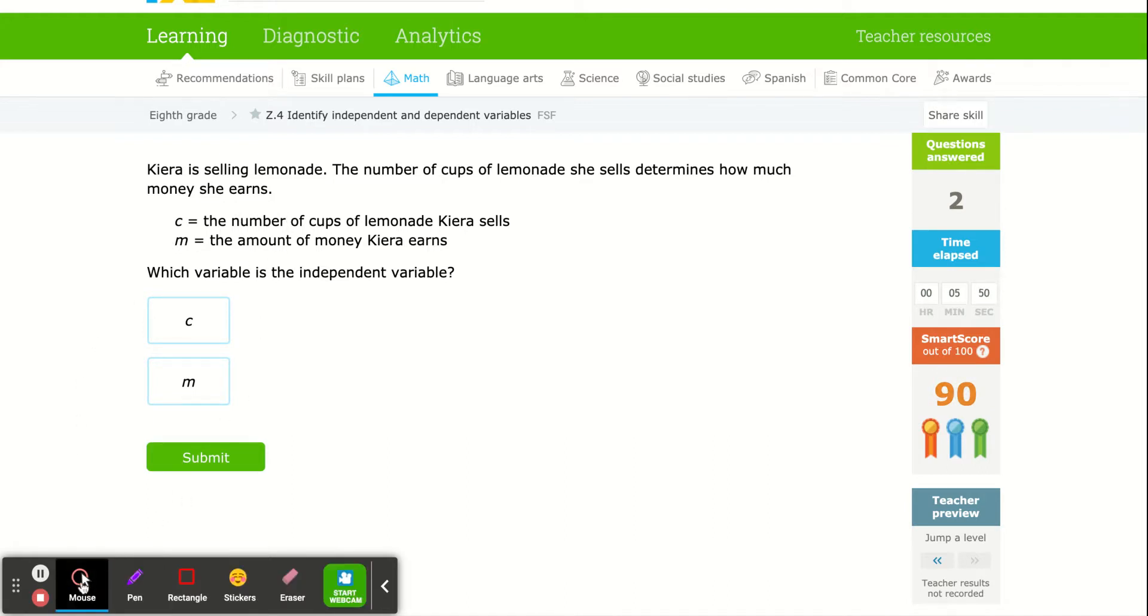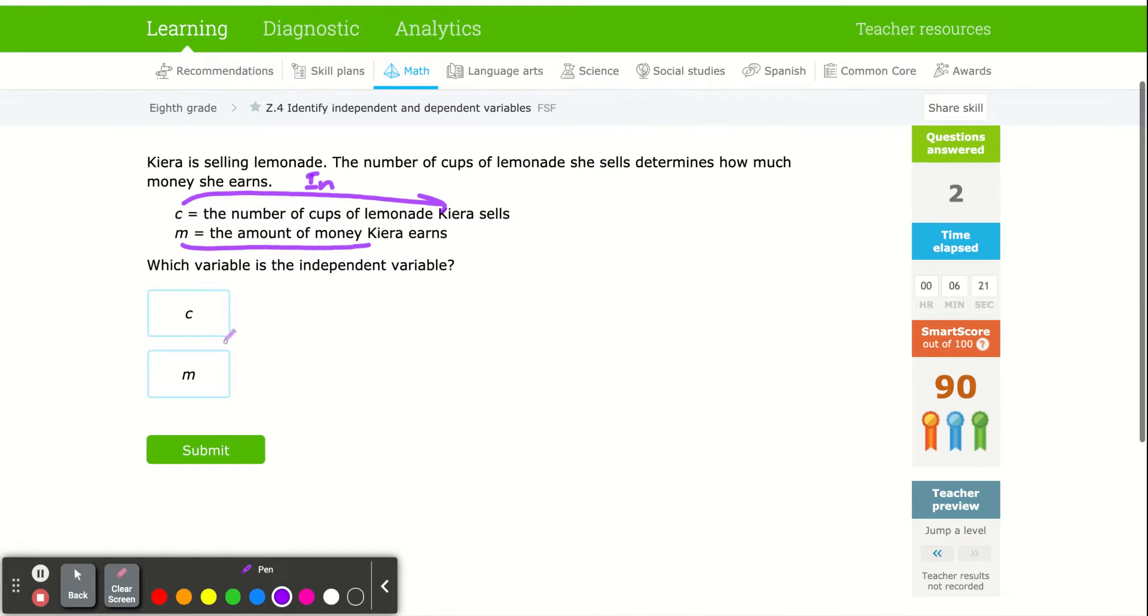So now what's the independent variable? Well, C is the number of cups of lemonade sells. That's the independent. She really has no control. It all depends on if someone comes up and buys. The amount of money Kara earns depends on how many she sells. So which variable is the independent? So again, C is the independent because she has no control over how many cups she sells. It depends on if someone comes up and buys. What determines the amount of money is how many she sells. So C is the independent.